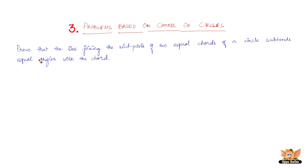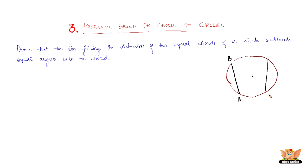Now the question goes like this: prove that the line joining the midpoints of two equal chords of a circle subtends equal angles with the chord. Let us draw two equal chords, name them AB and CD, and draw the line joining their midpoints E and F.